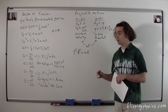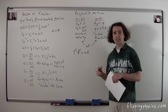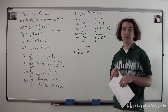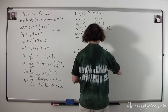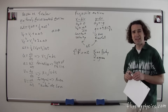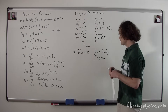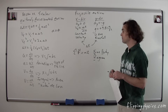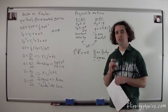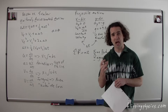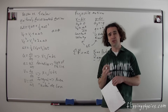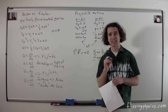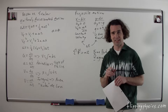The net force, or the sum of the forces, equals mass times acceleration, where both force and acceleration are vectors. Remember, whenever you're summing the forces you have to draw a free body diagram — sometimes also called a force diagram. You have to identify the object or objects you're summing the forces on, identify the direction, and if the positive direction isn't clear, you also need to identify what the positive direction is.